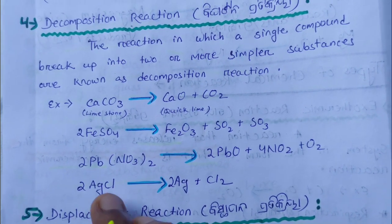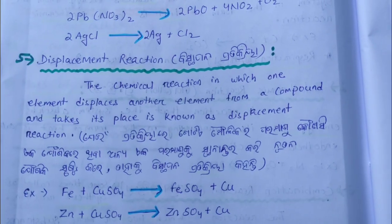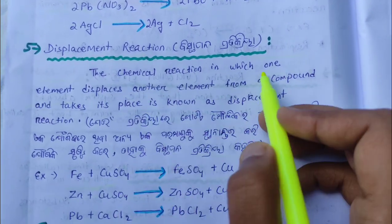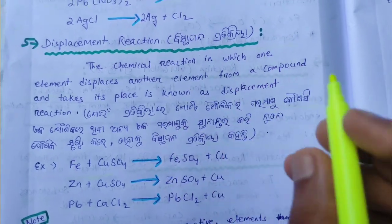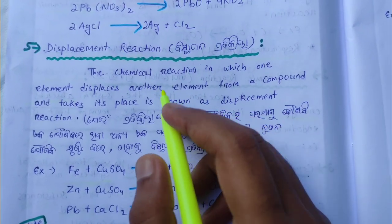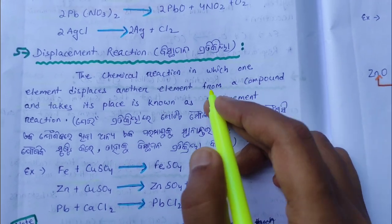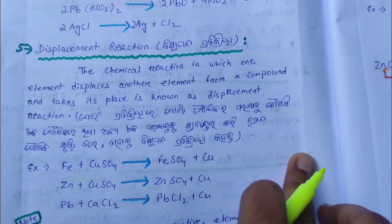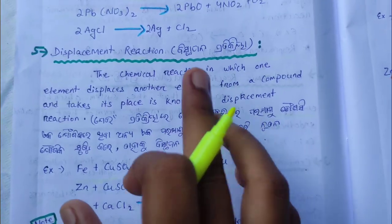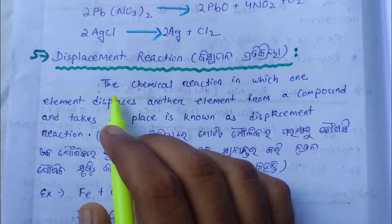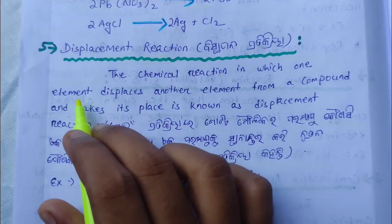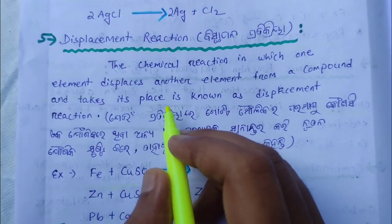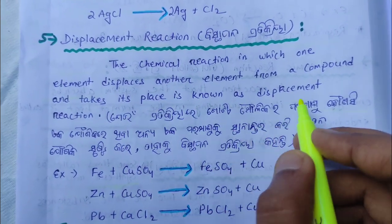Moving to displacement reactions. The chemical reaction in which one element displaces another element from a compound and takes its place is known as a displacement reaction.